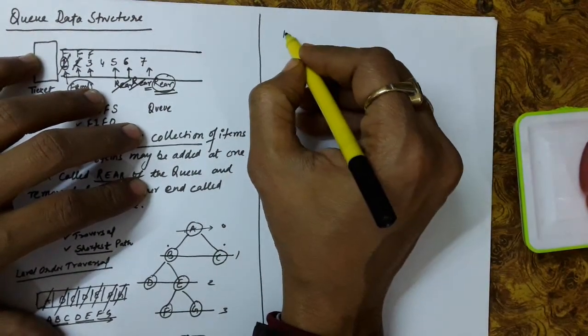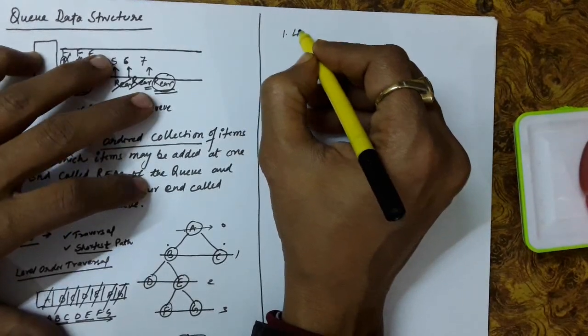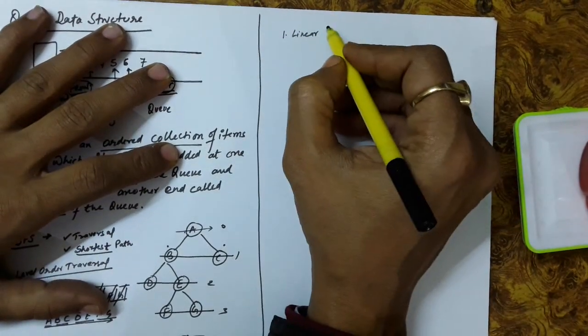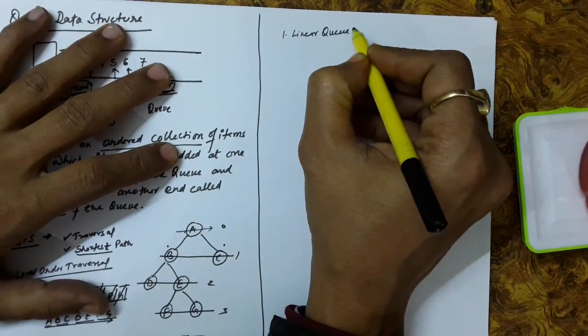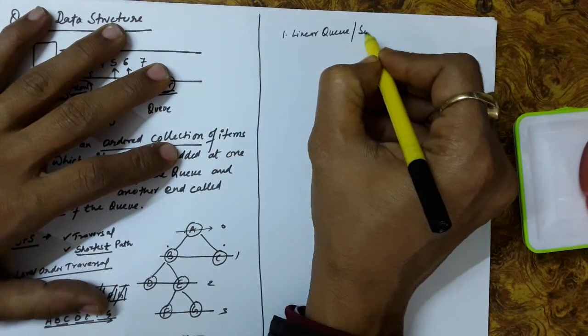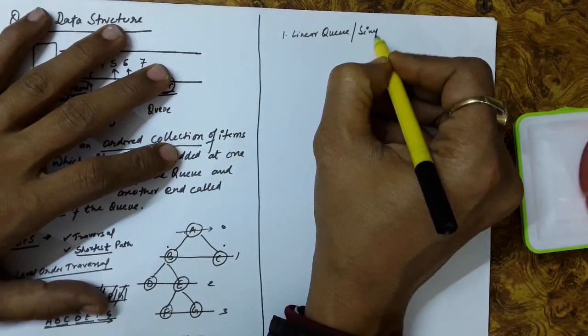One of the queues possible is a linear queue, also known as a simple queue.